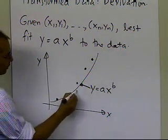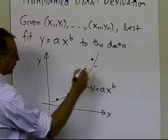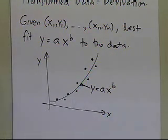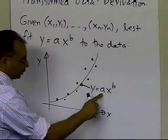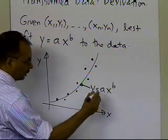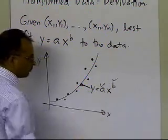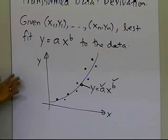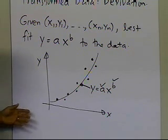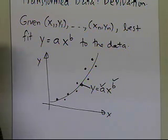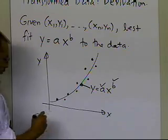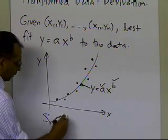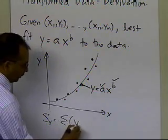We want to be able to find the constants of this model, and the two constants are a and b. What we're going to do is find them by transforming the data — that's what we meant when we said the derivation would be based on transformed data. Because if we start from the sum of the square of the residuals, as we have been doing, we get the observed value minus the predicted value.